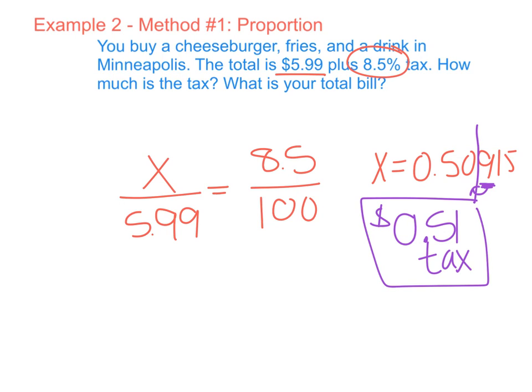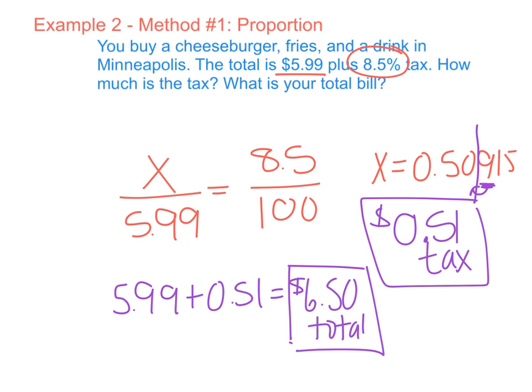Alright, and then to get our total bill, we're adding $0.51 to our original. So $5.99 plus $0.51 and we get a total of $6.50. Again, I'm making sure to kind of label it so I can keep track of everything as I go.